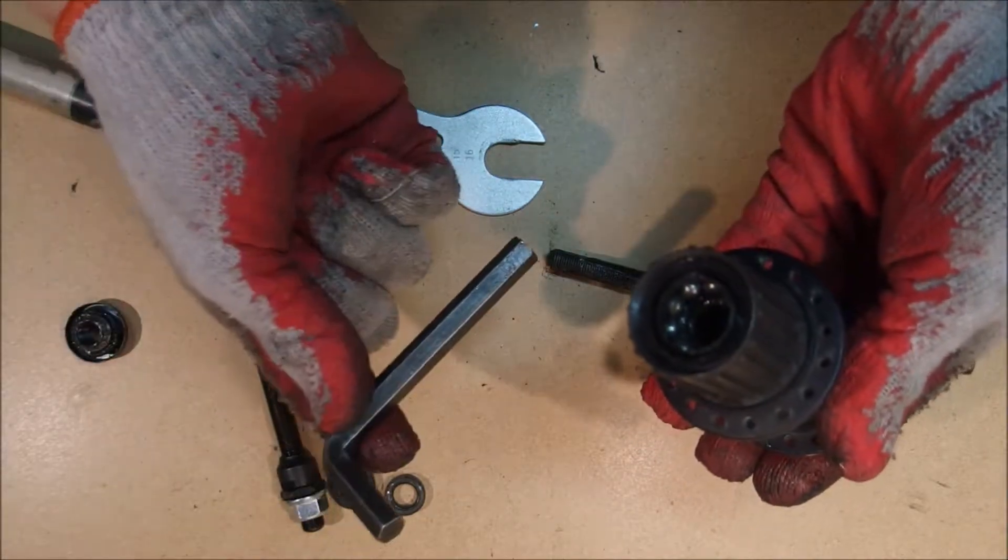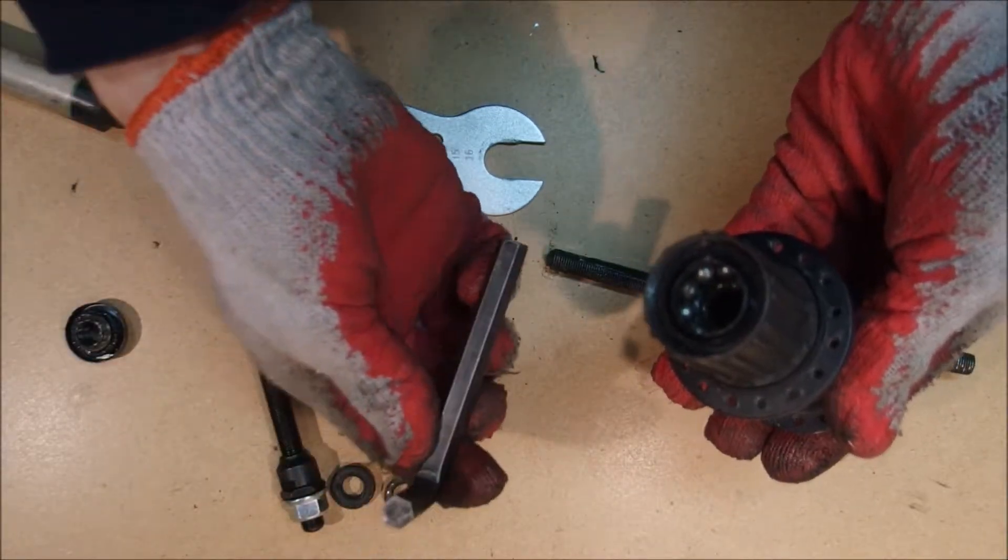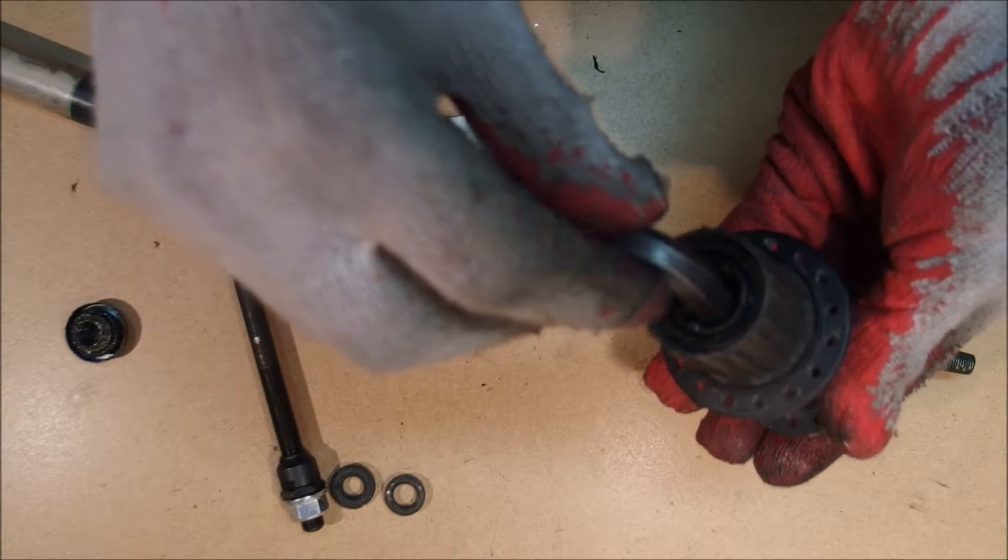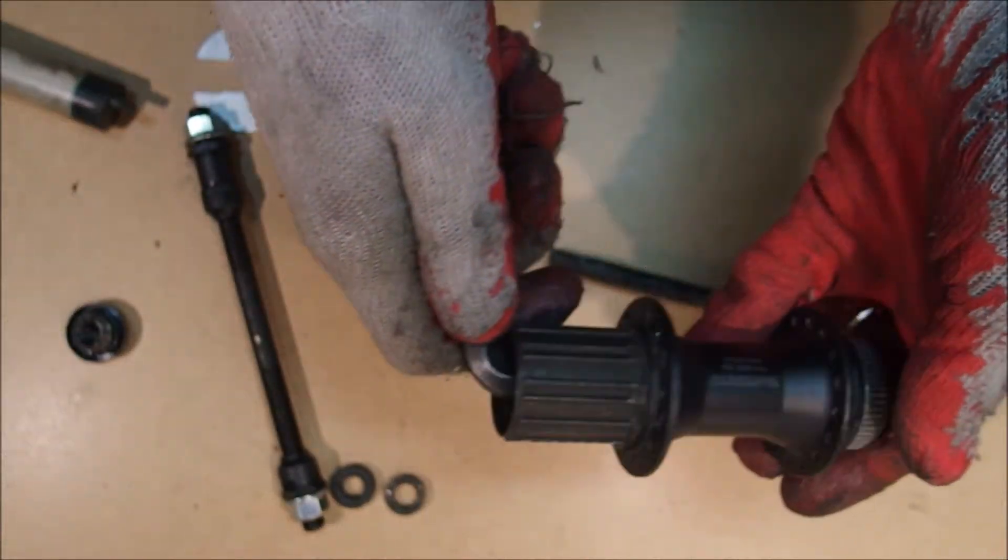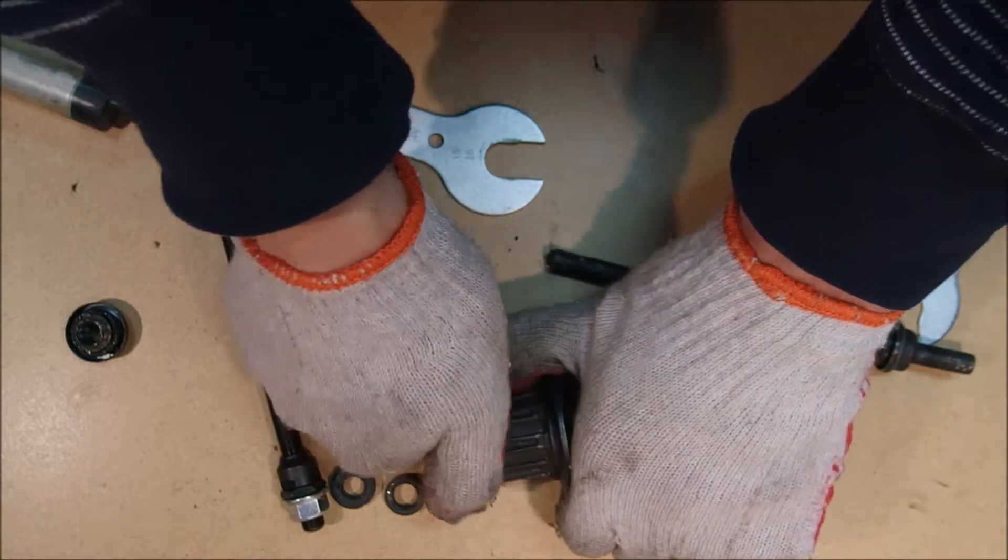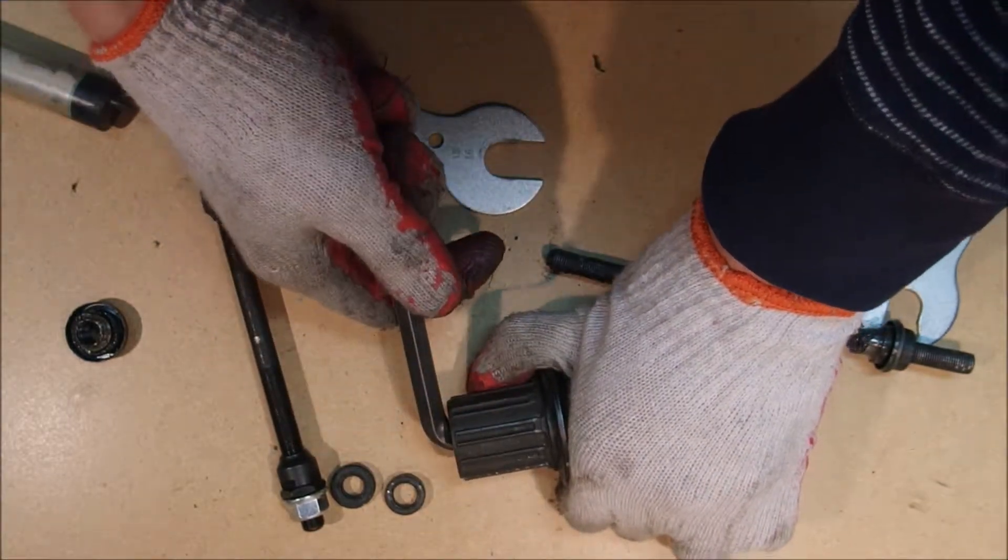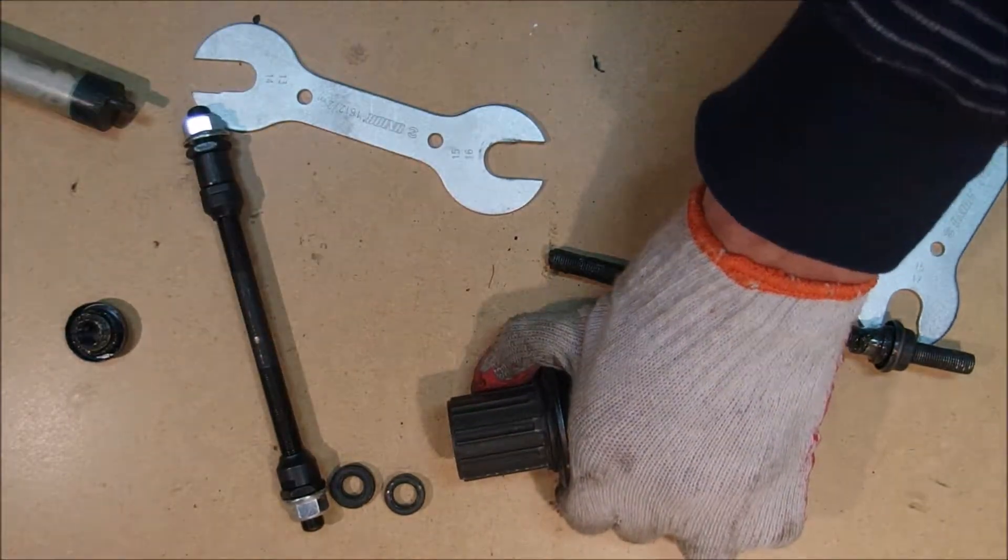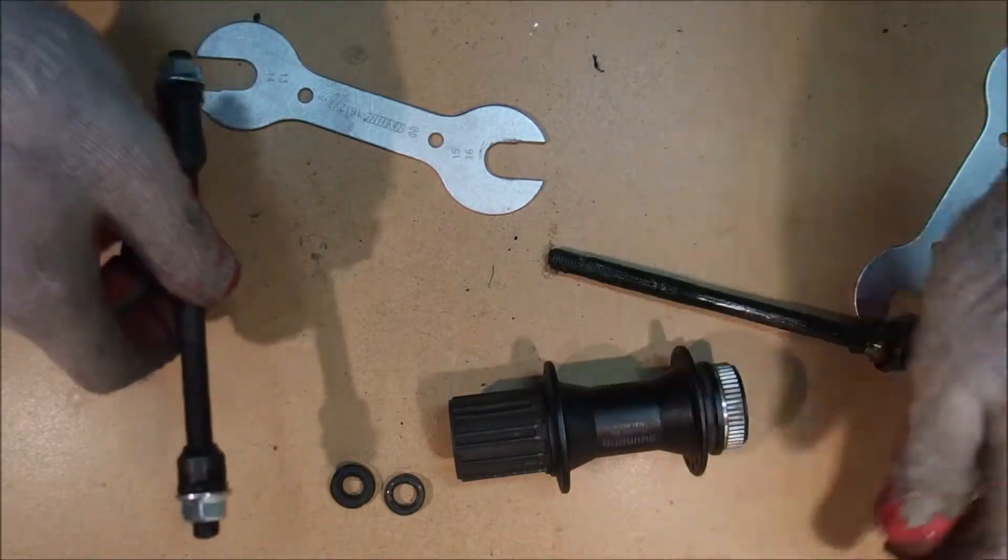However, if your hub has a 10mm interface like this one, then you can most likely replace the freehub with just about anything Shimano made in the last 20 years that is also using the same interface.